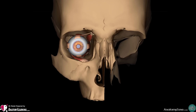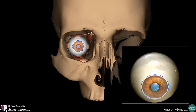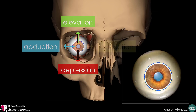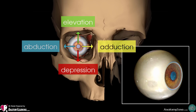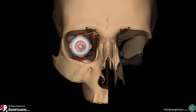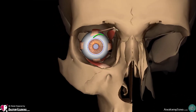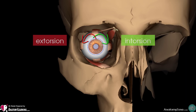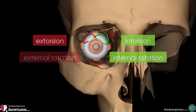Before we take a look at these muscles, let's review the different movements of the eyeball. We will use the pupil as the point of reference for movement. The pupil can be moved up and down, which is known as elevation and depression. Abduction and adduction of the eyeball causes the pupil to be moved laterally and medially, respectively. The eyeball also has torsional movements, which bring the eyeball towards the nose — intorsion — and away from the nose — extorsion. These movements are also referred to as internal and external rotation.